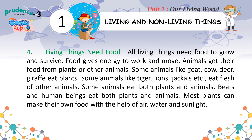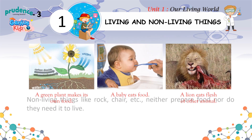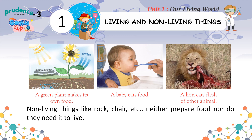Some animals like tiger, lion, jackals, etc. eat the flesh of other animals. Some animals eat both plants and animals. Most plants can make their own food with the help of air, water and sunlight. Non-living things like rock, chair, etc. neither prepare food nor do they need it to live.